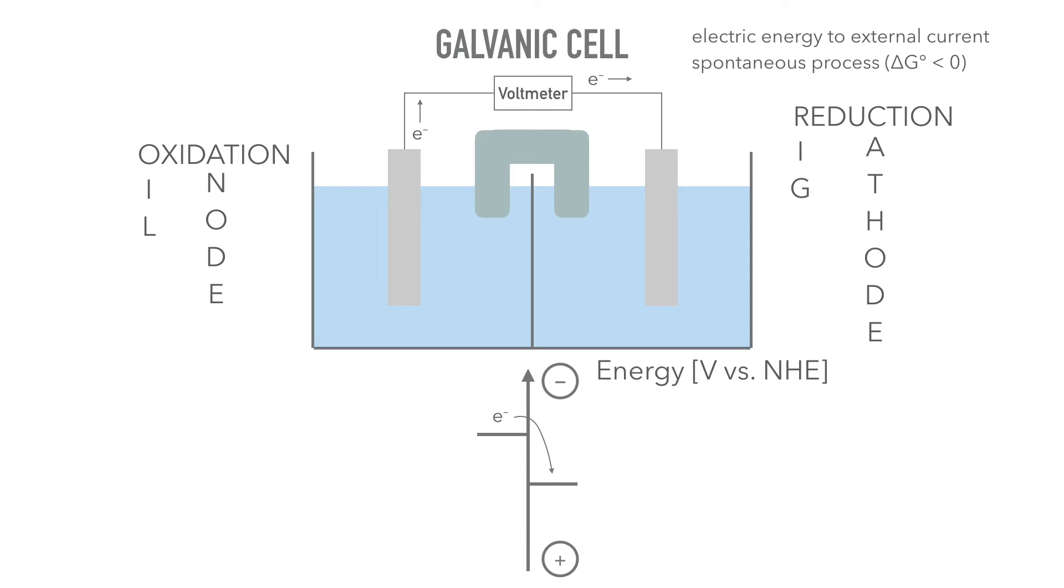In a zinc-copper cell, zinc has a more negative reduction potential. This half reaction is energetically higher than copper. Therefore, the zinc electrode is the anode and the copper electrode is the cathode.